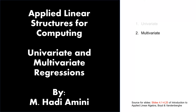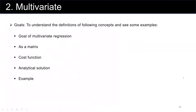This is part two of linear regressions. We want to talk about multivariate regression. The goal is to understand the definition of multivariate regression, how we represent the linear regression in the matrix format, the cost function, analytical solution, and finally showing one example.